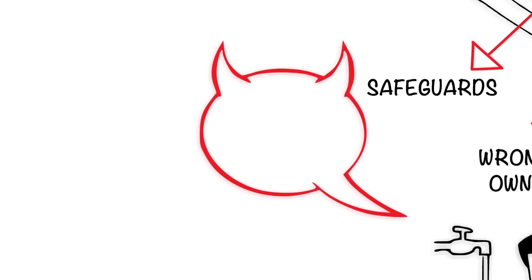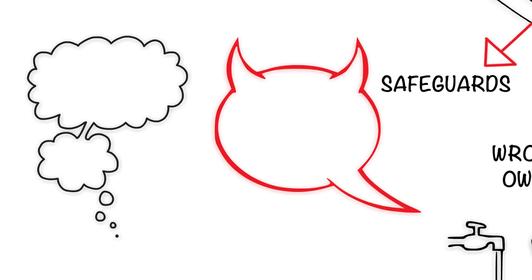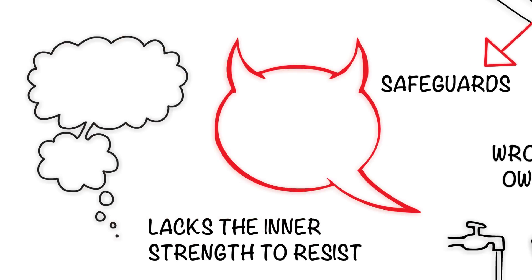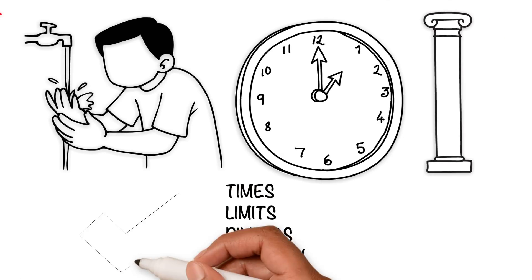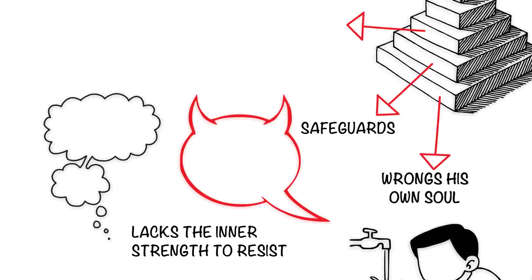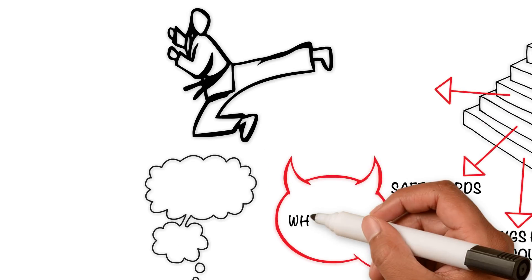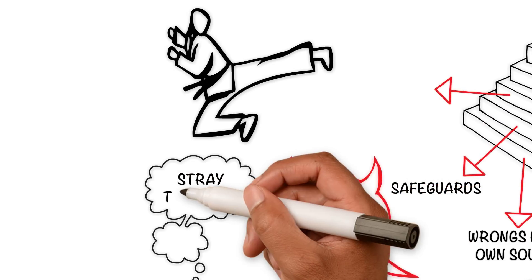The third is he who keeps the essential limits and essential pillars and inwardly strives to repel the whisperings and stray thoughts. This person is occupied with striving against the devil lest he rob him of his prayer.